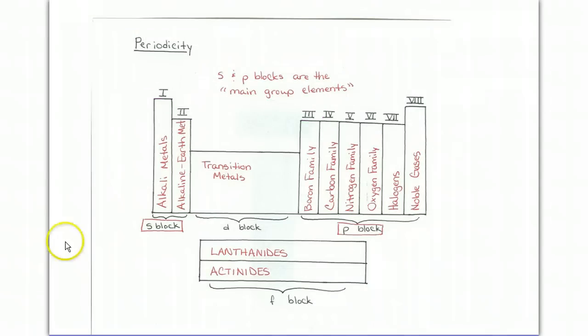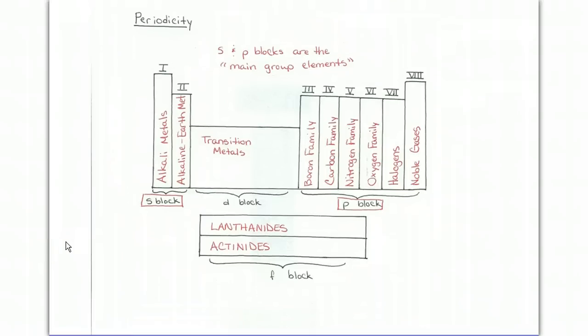Let's recap the group names that we should know. Group 1 are known as the alkali metals, and these all have 1 valence electron. Group 2 are known as the alkaline earth metals, and these all have 2 valence electrons. These 2 groups make up my S block. The center is the transition metals. They make up the D block and can have a varying number of valence electrons. The P block are groups 3 through 8.